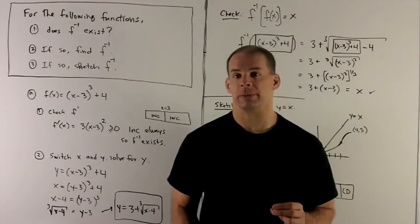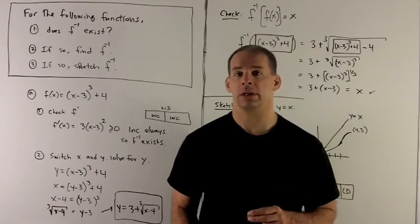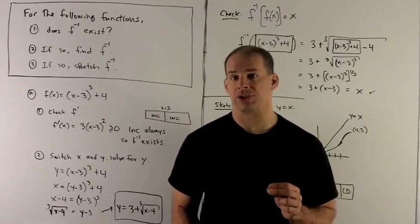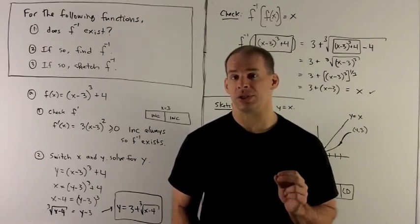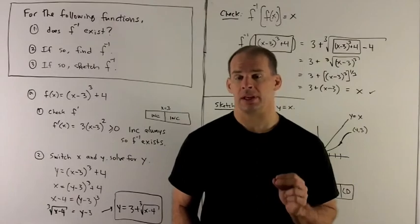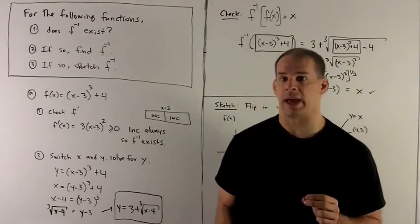So our first function is going to be f of x equal to (x minus 3) cubed plus 4. If I want to check whether f inverse exists or not, one thing we can do is see if it's increasing or decreasing everywhere. If so, then we'll have an inverse.